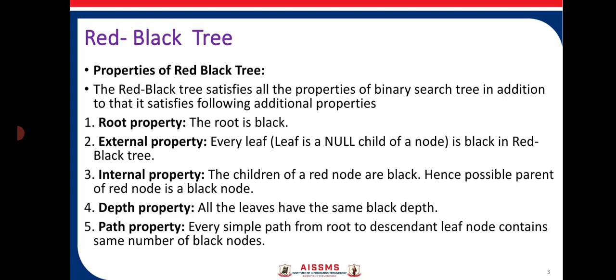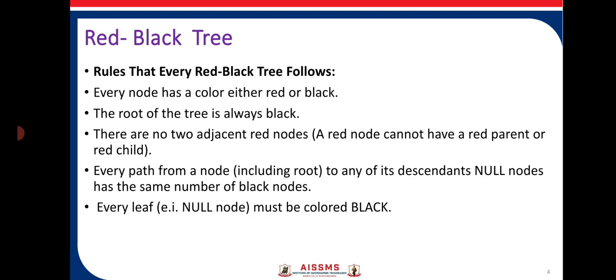The depth property states that all leaves have the same black depth, meaning all leaves must be at the same level. The path property states that every simple path from the root to a descendant leaf node contains the same number of black nodes — in any direction from the root to a leaf, the count of black nodes must be equal. In total, there are five properties for the Red-Black Tree.